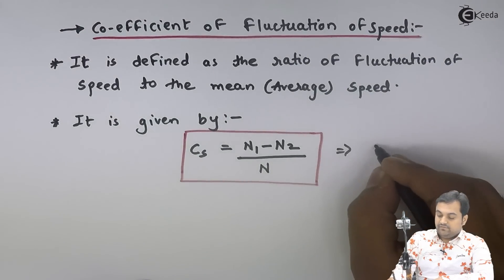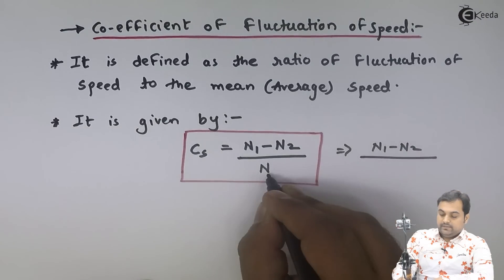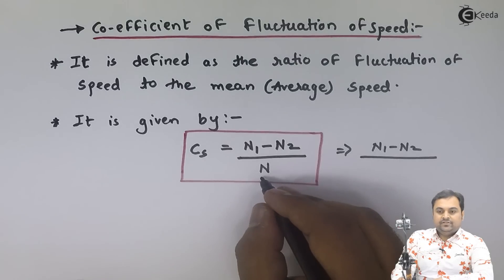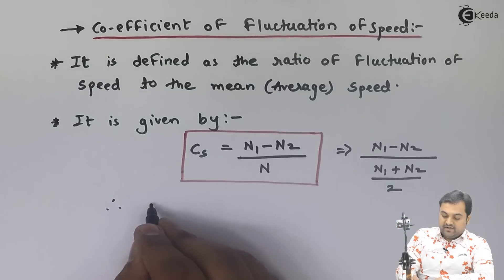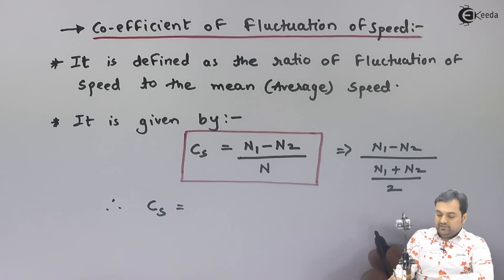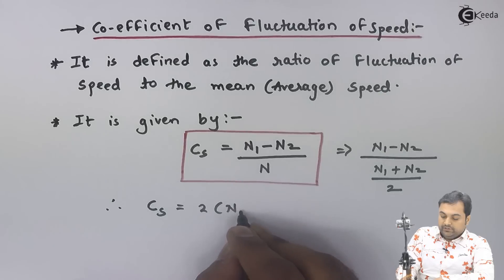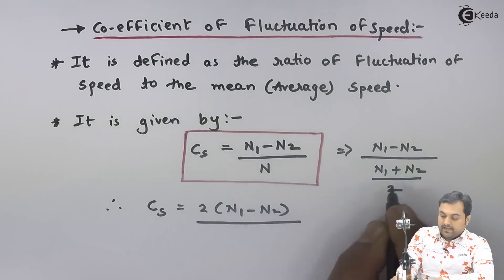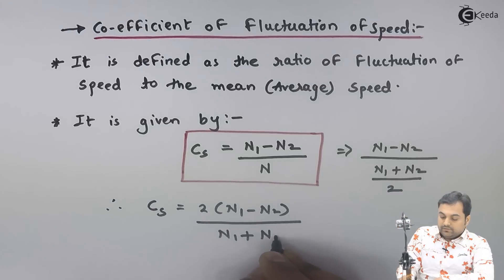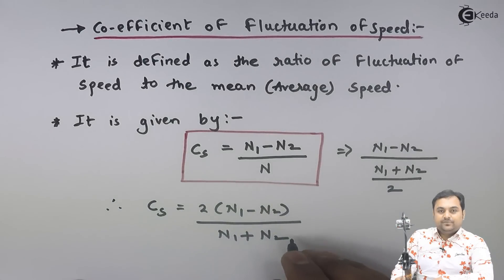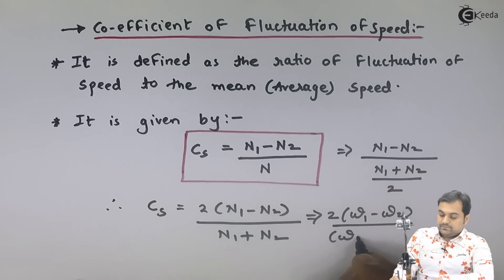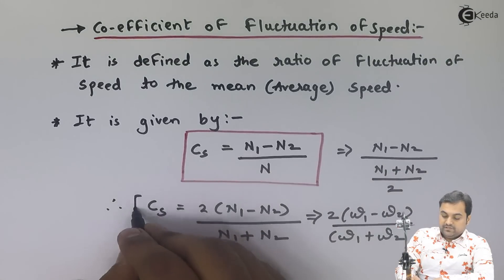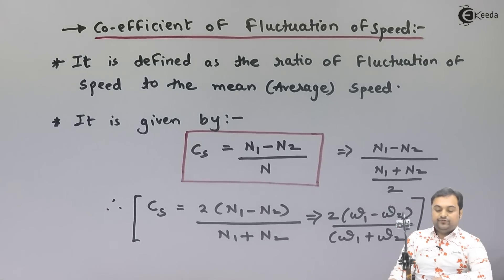The mean speed N in the denominator can be written as N1 plus N2 divided by 2. So the coefficient of fluctuation of speed becomes 2 times (N1 minus N2) divided by (N1 plus N2). This is the formula in terms of RPM. The same formula can be written using angular velocity by replacing N with omega.